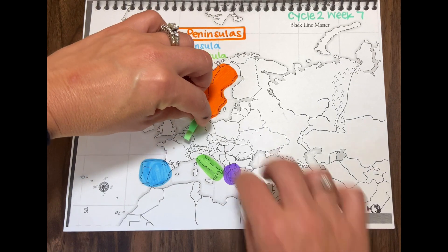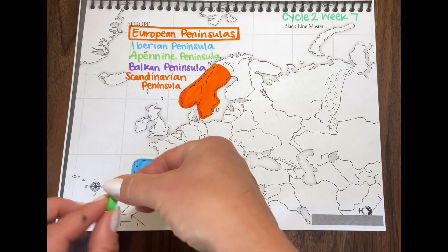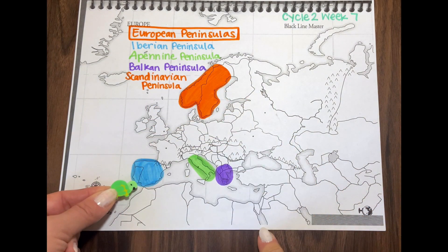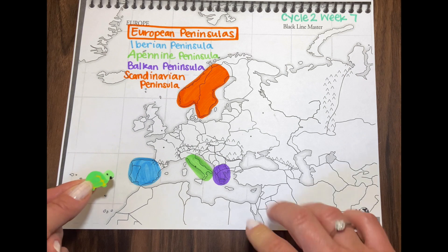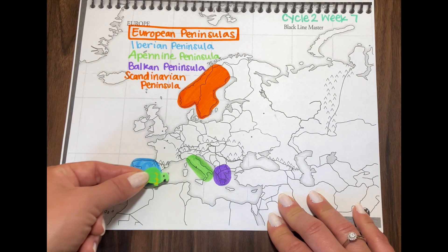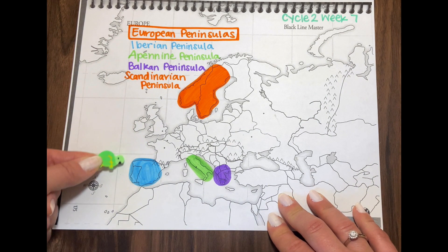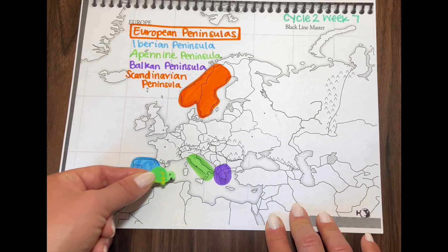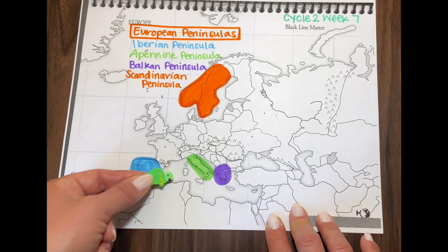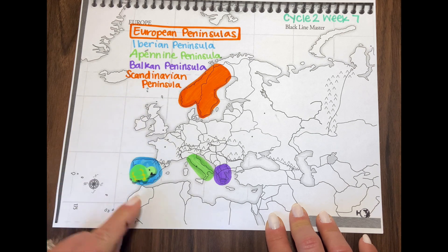And walk on down to the Iberian peninsula in Spain and Portugal. There are three sides surrounded by water — over here we have the Atlantic, and over here we have the Mediterranean Sea. So this is called the Iberian peninsula.